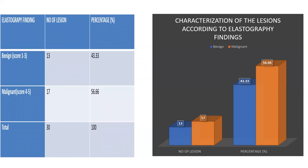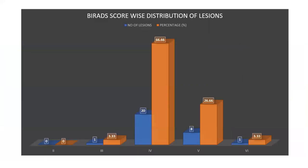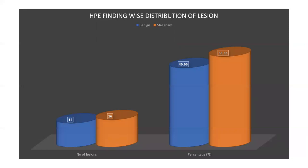Based on elastographic findings, 13 out of 30 lesions had a benign score and 17 had a malignant score. Regarding BIRADS distribution, the maximum number of lesions were categorized as BIRADS 4 (probably malignant, likelihood of cancer 2–95%), comprising 66% of the population. The next most common was BIRADS 5, indicating high likelihood of cancer (>95%), comprising 26% of the population. On histopathology, 14 cases were benign (46%) and 16 cases were confirmed malignant (53.3%).